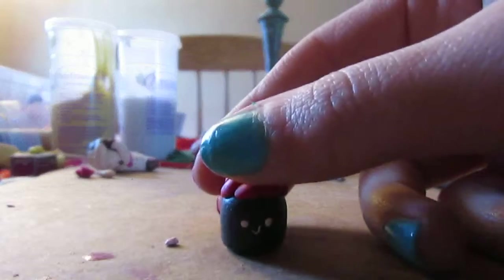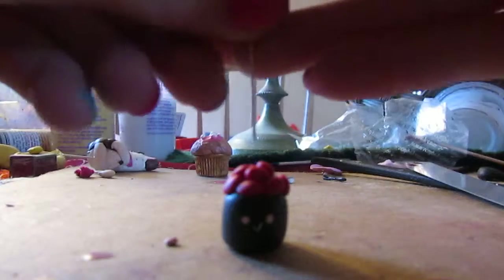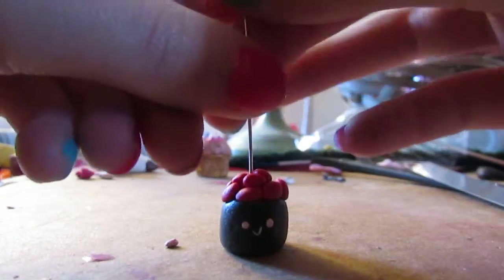I'm going to place it on this side. So now all I'm going to do is I'm going to take an eye pin, and I'm just going to put it right in his little fish eggs. Pop it through.